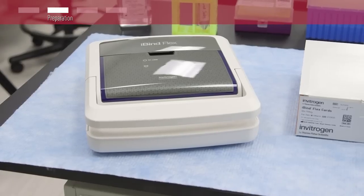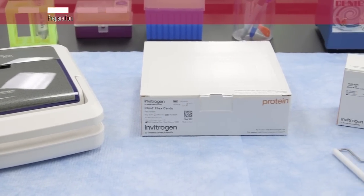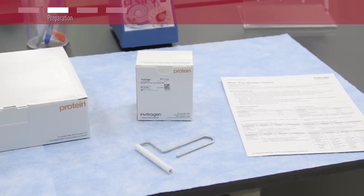In order to process your Western blots, make sure you have an iBind Flex device, an iBind Flex card, the iBind Flex solution kit, the roller, and the quick reference card.